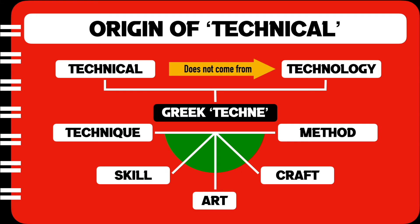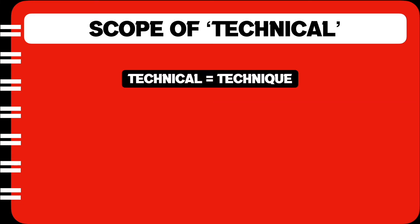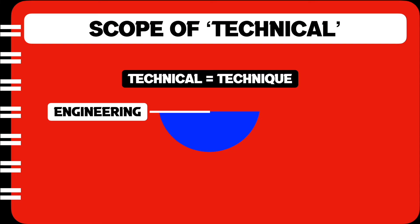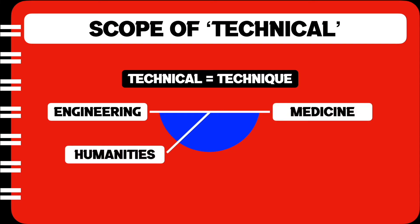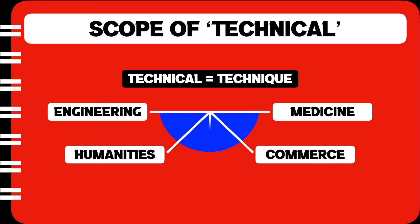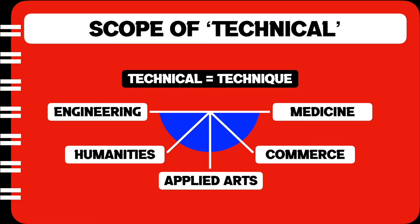So now that we understand the origin of the word technical, let us have a look at the scope of technical. Technical, as we understand, is a set of specialized skills or techniques. So it can be easily applied to the field of engineering as well as medicine, to humanities, technologies, to commerce and business, and even to the arts. In fact, if I put it in a nutshell, technical can refer to any field which requires specialized skills and techniques.